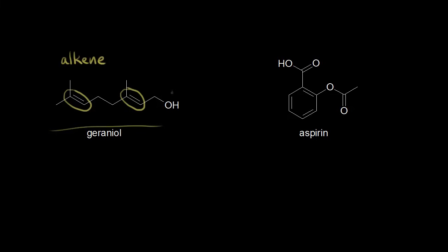What is this functional group? We have an OH and then the rest of the molecule. So we have ROH. ROH is an alcohol. So there's also an alcohol present in this compound.